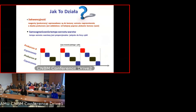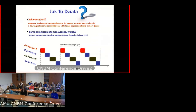Jak ta technika działa? Po pierwsze jest to technika sekwencyjna — prekursory chemiczne, reagenty, wprowadzane są do komory wzrostu naprzemiennie, a dawka prekursora jest oddzielona od kolejnej poprzez płukanie komory gazem obojętnym, na przykład azotem lub argonem. Po drugie, bardzo istotne jest samoograniczenie tempa wzrostu warstwy — ze względu na wysycenie reagenty wytwarzają silne wiązania chemiczne na powierzchni substratu. Nie może powstać nic ponad jedną monowarstwę, ponieważ to, co nie przereaguje z substratem, zostaje odpompowywane przez pompę na zewnątrz.